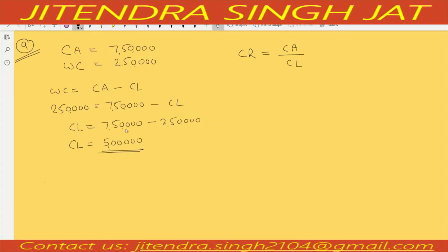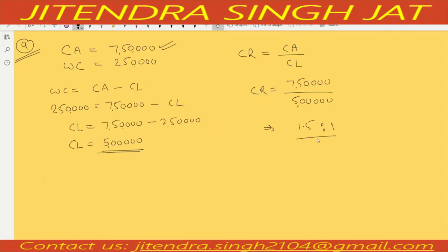Now we have current liability and current asset is already given, so we can compute current ratio: 7,50,000 divided by 5,00,000 equals 1.5 is to 1.